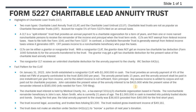John calculates the present value of the annuity interest at $415,000 and the remainder interest at $585,000. This information isn't strictly necessary for the 5227 and 1041, but it is important for the 709 gift tax return filing. The charitable lead interest goes to a medical charity, which receives the payments each year, and the non-charitable remainder goes to John's son, Adam Smith, who is currently 21 years old.